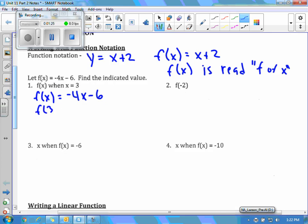f of x equals negative 4x minus 6 and everywhere we see x, we're going to plug in 3. So to solve for f of 3, we're going to do negative 4 times 3 minus 6. So when I work that out, I get negative 12 minus 6, which is negative 18. So for this function, when x equals 3, f of x equals negative 18.